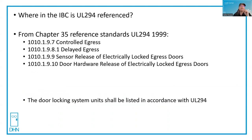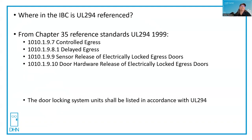In Chapter 35, they have reference standards — that's the name of the chapter. UL 294 1999 edition is referenced by section 1010.1.9.7 for controlled egress, 1010.1.9.8 for delayed egress, and 1010.1.9.9 for sensor release of electrically locked egress doors.